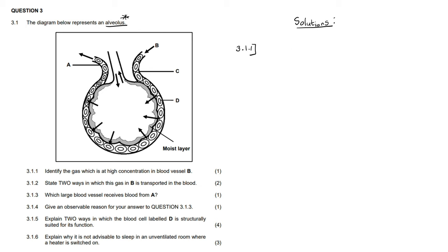In this diagram of an alveolus, the arrows indicate incoming air that was inhaled and is rich in oxygen, and outgoing air that is being exhaled. You can see arrows showing that the oxygen-rich air diffuses into the surrounding blood vessels, while carbon dioxide leaves the blood to be exhaled. That is the real analysis needed for this diagram.